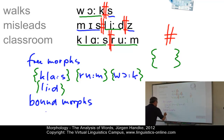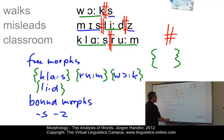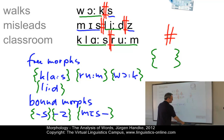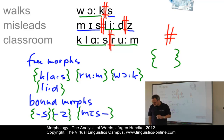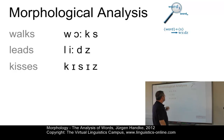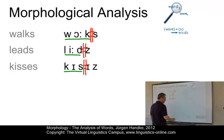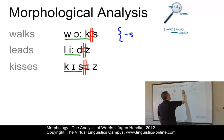Looking at our bound morphs: we have {S-}, and normally to indicate position, we use a hyphen showing it occurs after something. Then we have {Z-} which also occurs after something. And finally we have {mis-} that occurs before something else. We use curly brackets to indicate these are morphs. So this is the first step: we analyze words into their component parts, and as a result we get morphs.